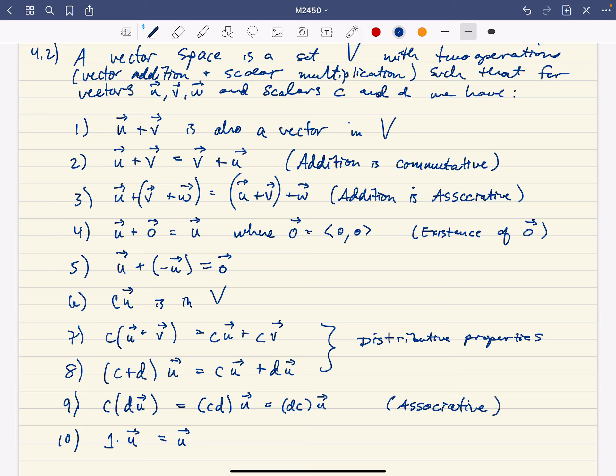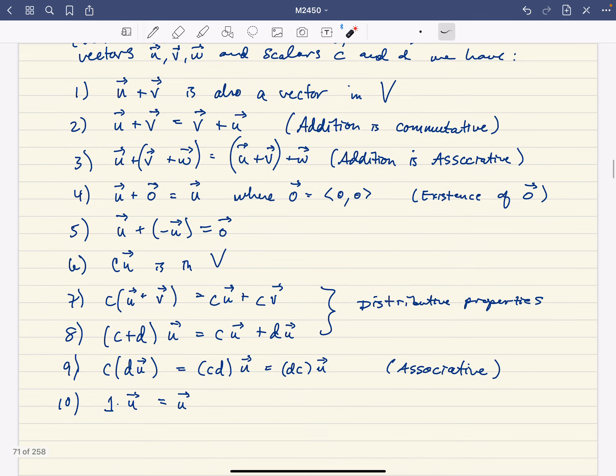So, for example, a vector space—well, let's just go over the 10 properties very quickly. If you add two vectors, you get another vector in the vector space. Vector addition is commutative. Vector addition is associative.